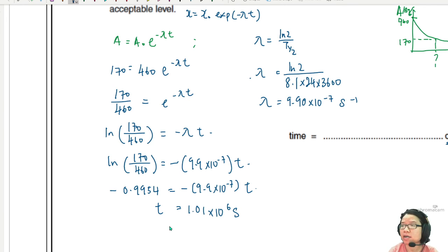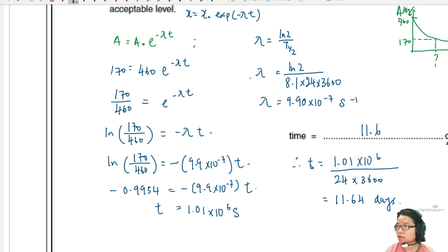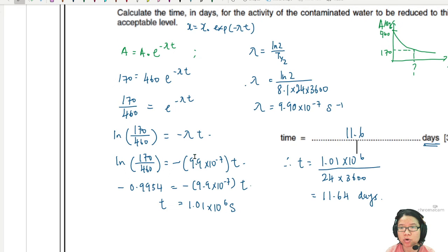They want it in days, so we need to convert. T equals 1.01 times 10^6 divided by 24 times 3600 to convert seconds to days. This gives 11.64 days. That's it for this question. Where are your three marks? One mark is for both equations - A equals A naught e^-lambda t and lambda equals ln 2 over t half. That's C1. Then we're looking for correct substitution for A and A naught, and correct substitution for lambda. The final answer is C1. Make sure you convert it to days.